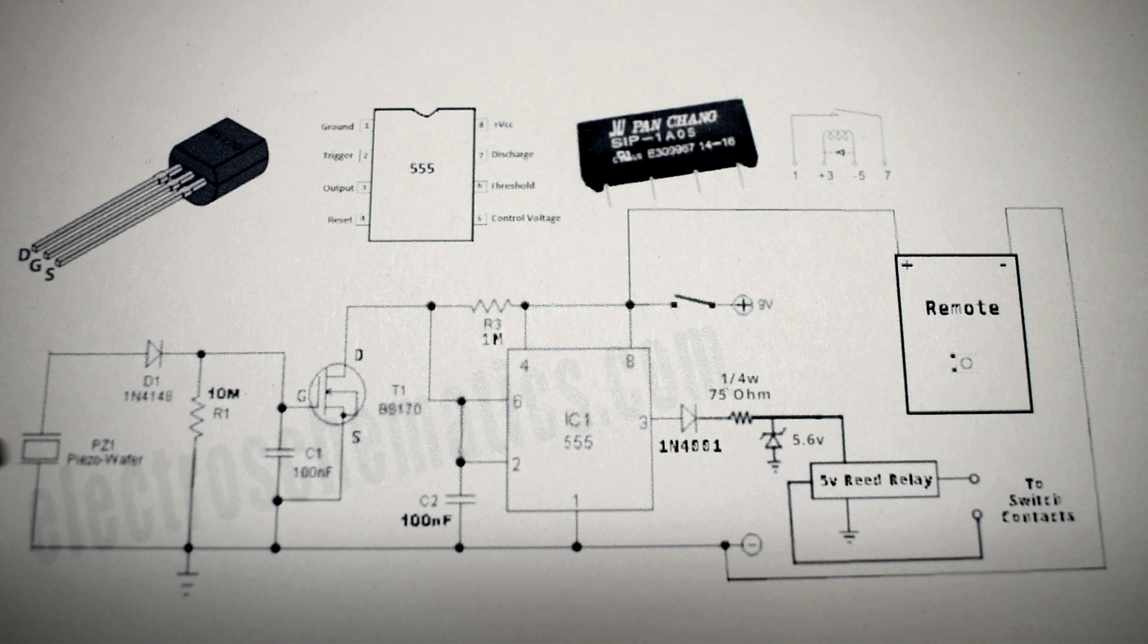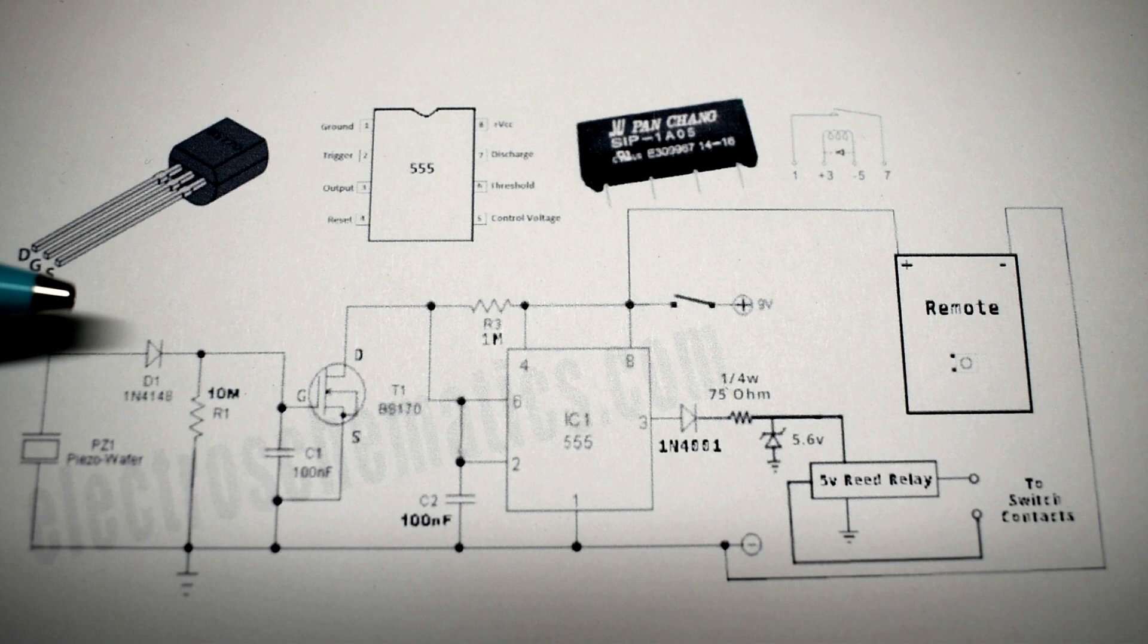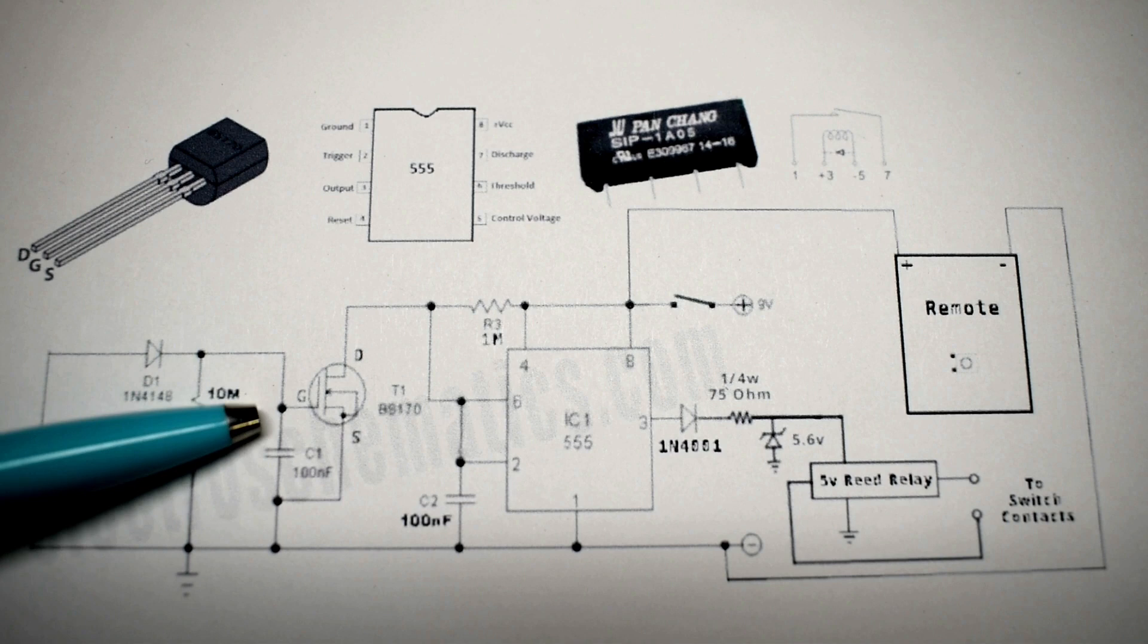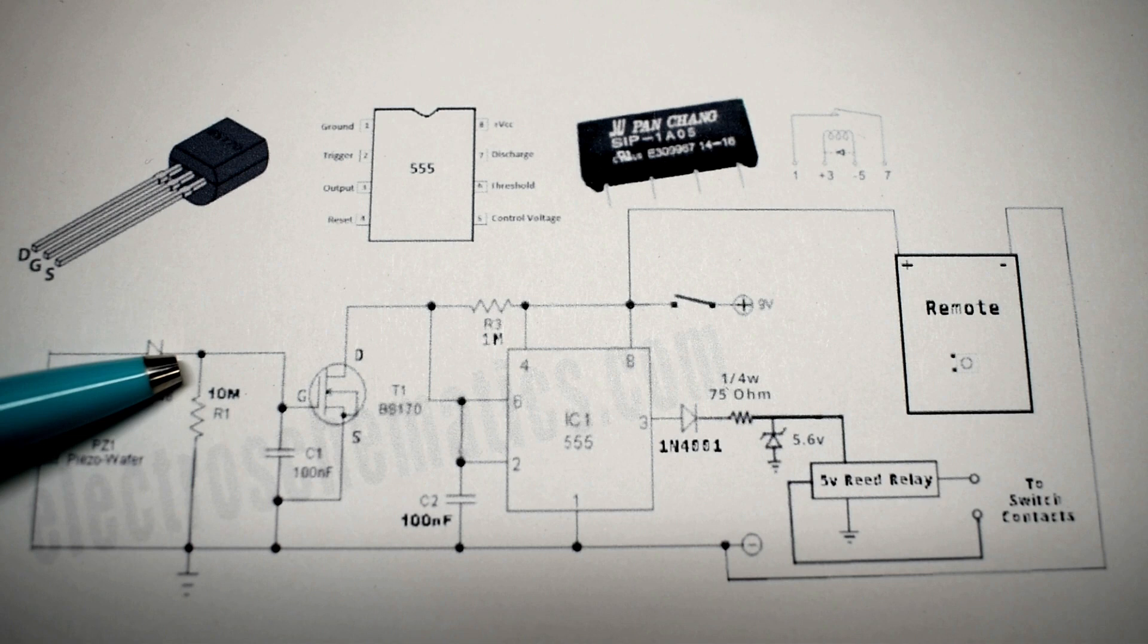I'm going to go over the schematic very quickly. On the left side, you have your piezo wafer. When this is subjected to shock, vibration, you're going to have an AC voltage that's generated. It's going to be a very low voltage, but it's enough to make the circuit operate. The voltage is generated, and you can see there's a diode right over here. It's a 1N4148. The purpose of that is to ensure that we only get a positive pulse making it through. You don't want to have negative pulse go over to the gate of this MOSFET, because it will not trigger. We need a positive pulse.